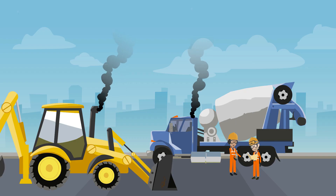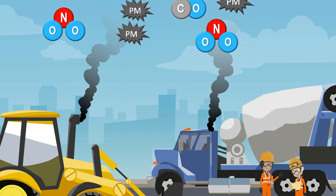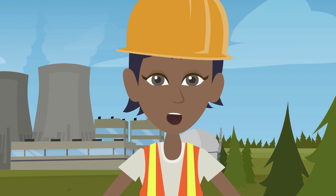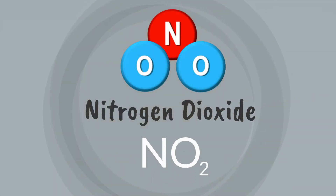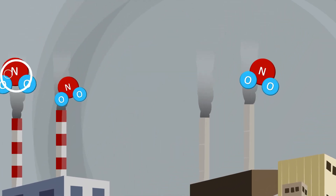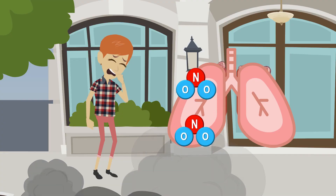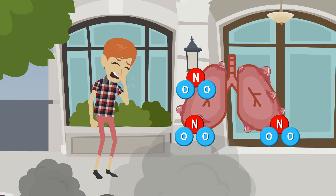The air pollution we are talking about consists of a series of gases and tiny particles of dust that can cause health problems. In construction, the most significant ones are nitrogen dioxide, also known as NO2, which is one of a group of gases called nitrogen oxides produced by the burning of fossil fuels. There is good evidence that they are harmful to health and damage the lungs, causing respiratory symptoms such as asthma and bronchitis.